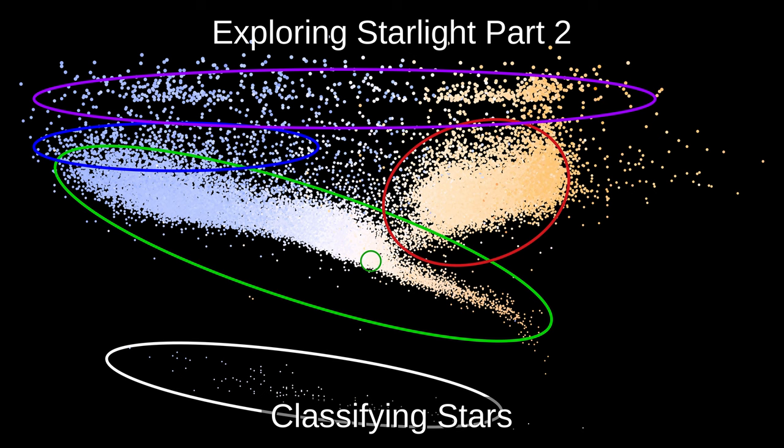Hello and welcome to Astronomy with Mr Gerin. In part one we learned how to use starlight to measure the distance and chemical composition of stars. Today we'll look at how we can classify stars using the Hertzsprung-Russell diagram, and in part three we'll learn about variable stars.